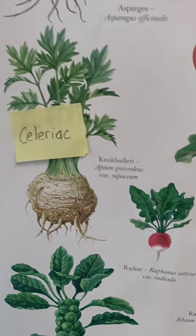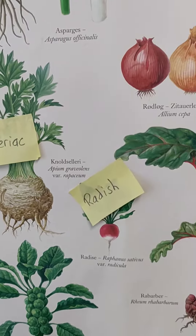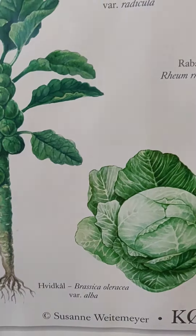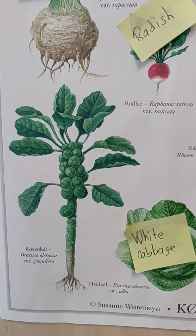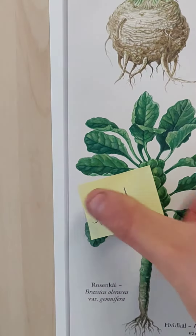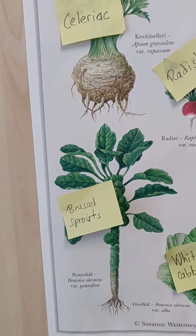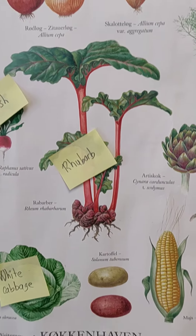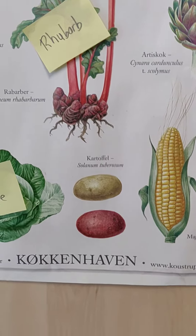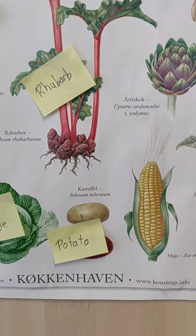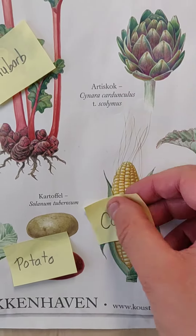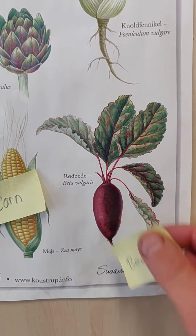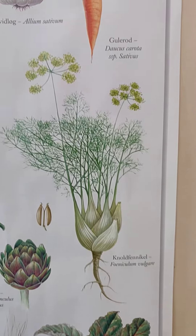Celeriac, and just next to celeriac is radish. Then let's try and move down here to white cabbage, and just next to white cabbage, Brussels sprouts. Now let's try and move here to the middle — we have rhubarb, and just below rhubarb is potato. And there we have corn; beside corn is beetroot.